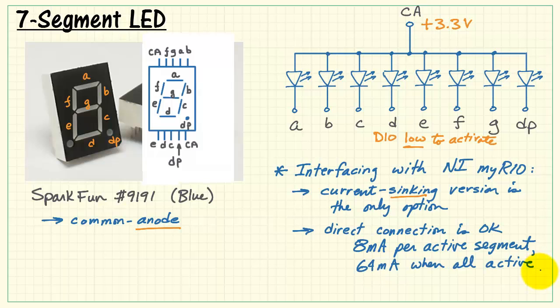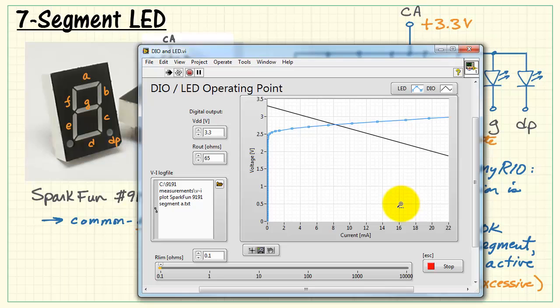Now when all segments are active, we would have 8 times that value, or 64 milliamps. Depending on your product application, this might be a bit excessive when you have all 8 active at once.